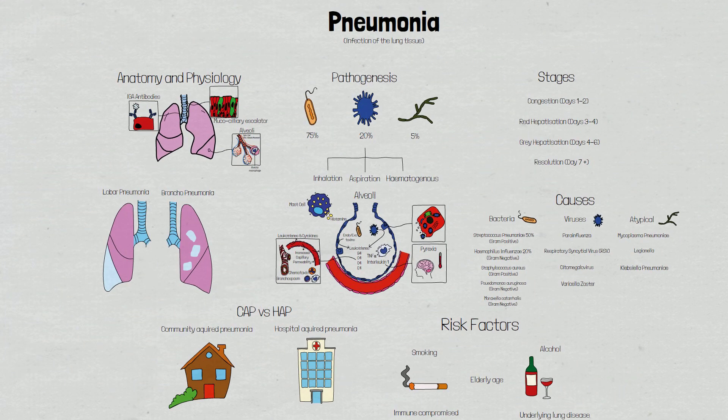To recap: despite pulmonary defence mechanisms, bacteria, viruses and fungi can infect the lung tissue leading to inflammation and consolidation. This inflammatory response, as well as impaired gaseous exchange, leads to the signs and symptoms associated with pneumonia. Pneumonia can be categorised based on the setting in which it has developed, with hospital acquired pneumonia being the most dangerous. There are several modifiable and non-modifiable risk factors that alter an individual's chance of developing pneumonia.